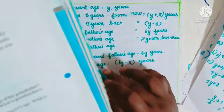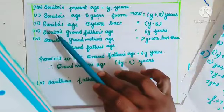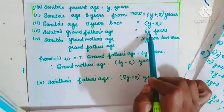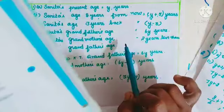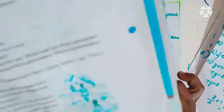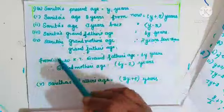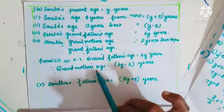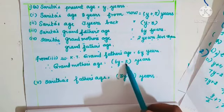Sarita's grandfather is 6 times her age, so grandfather's age equals 6 into Y, which is 6Y. Grandmother is 2 years younger than grandfather, so grandmother's age equals 6Y minus 2 years.